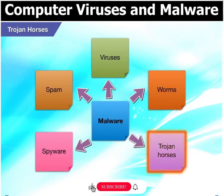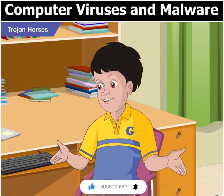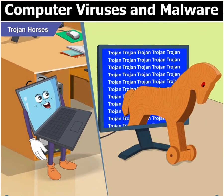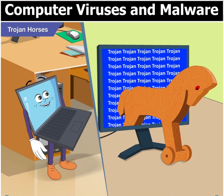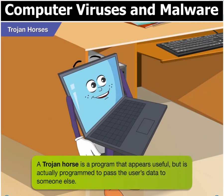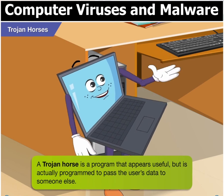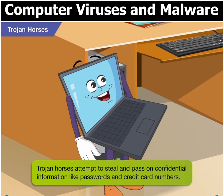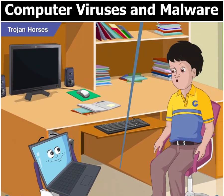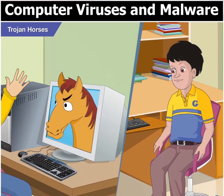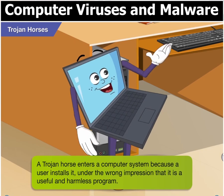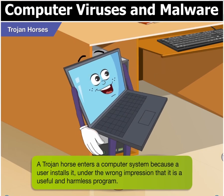The next type of malware is a Trojan horse. Yes, I read about that in a story book. It was used in an ancient war in Greece. No Goggle, this Trojan horse is a computer program but it functions the same way as the Trojan horse did in the story. A Trojan horse is a program that appears useful but it actually intends to pass the user's data to someone else. A Trojan horse attempts to steal and pass on confidential information like passwords and credit card numbers. It means people are fooled into believing that the malware is useful when in fact it is dangerous. A Trojan horse enters a computer system because the user installs it, thinking that it is a useful, harmless program.